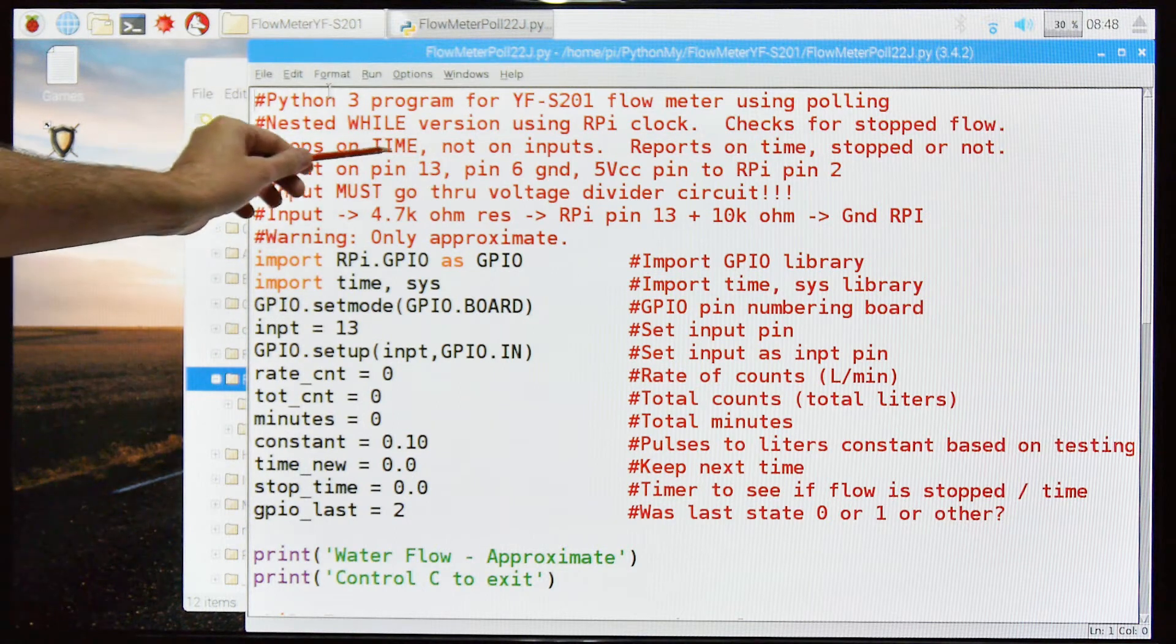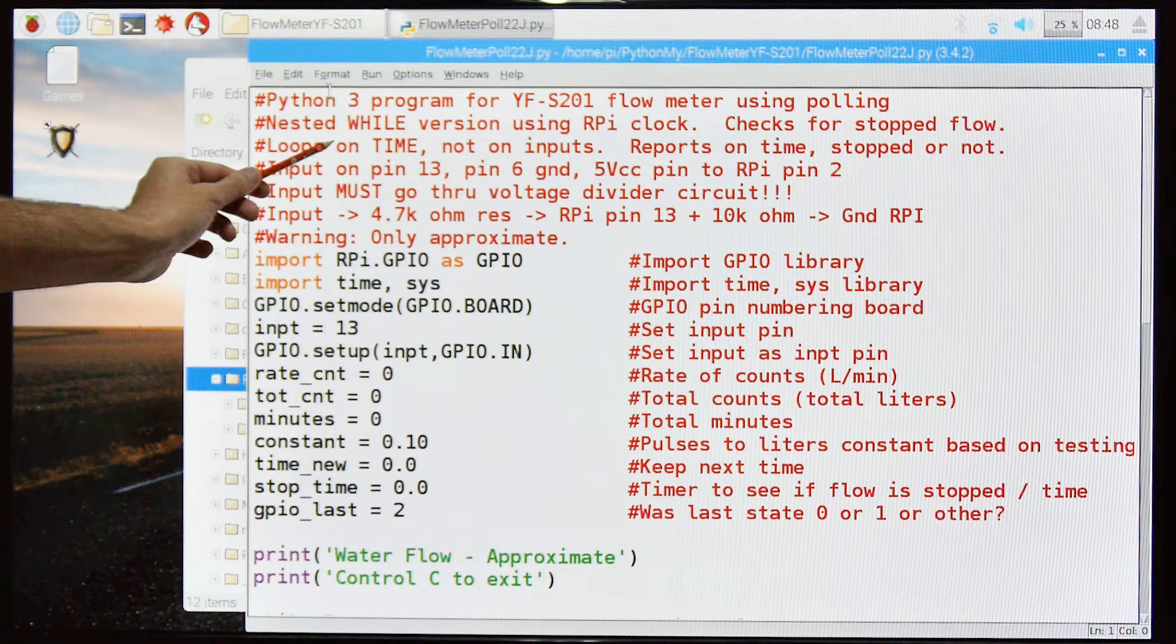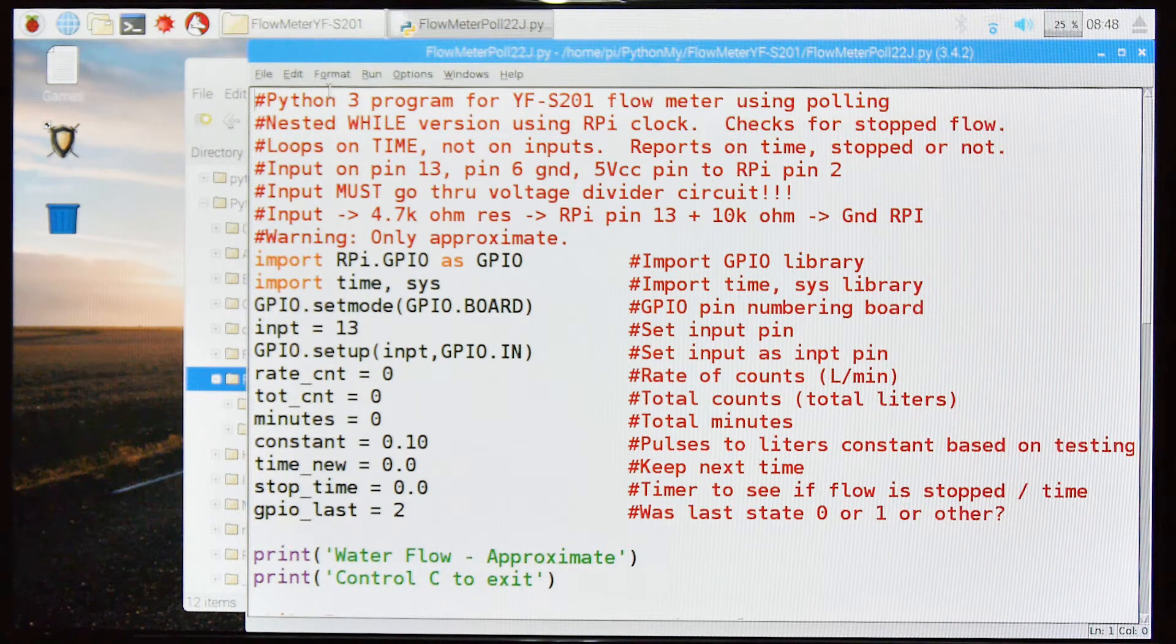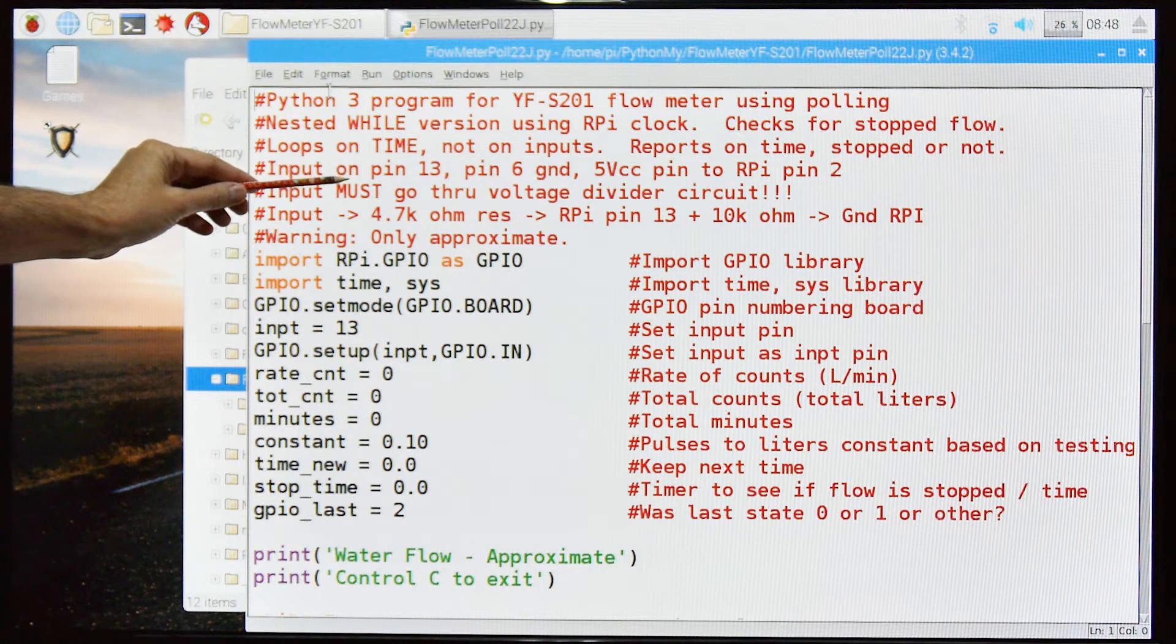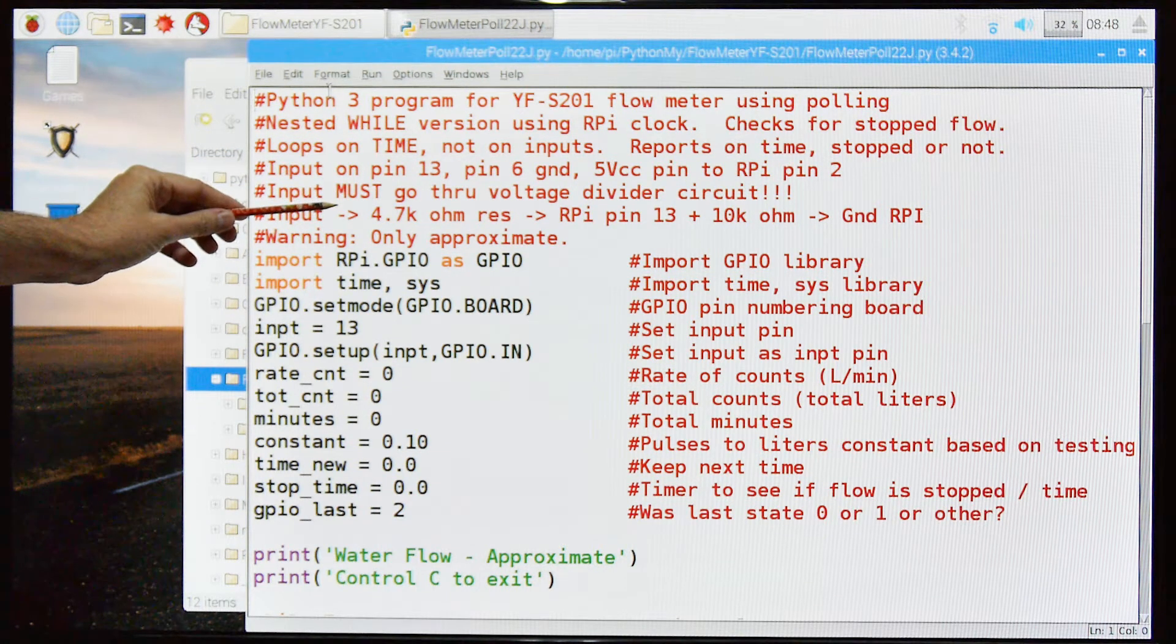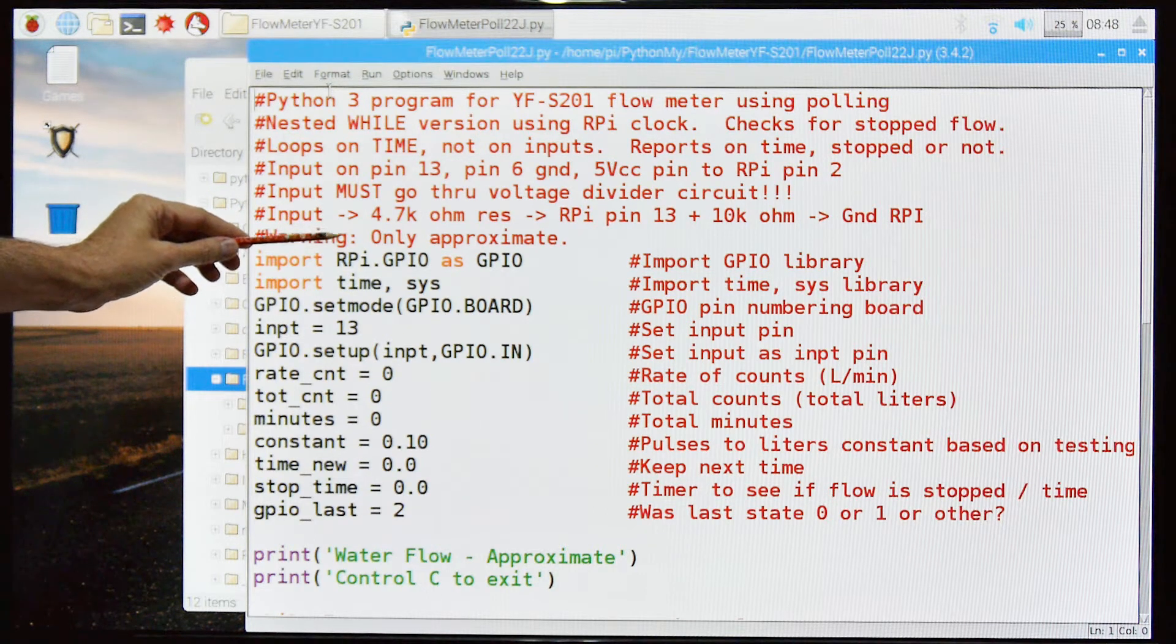This loops on time, not on inputs. My other polling version, my other advanced polling version, it loops on inputs. So this one waits for a certain amount of time to happen and then reports. The other version reports based on the number of revolutions when the impeller is turning.